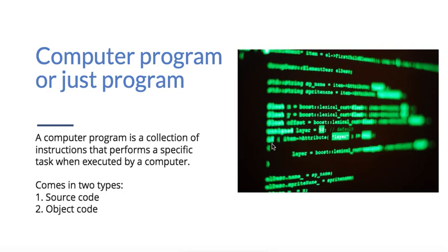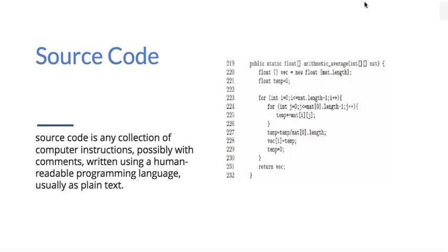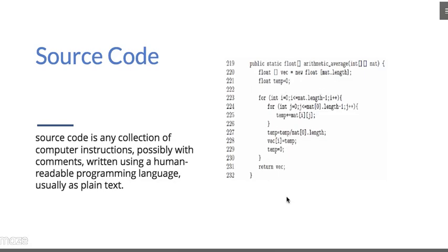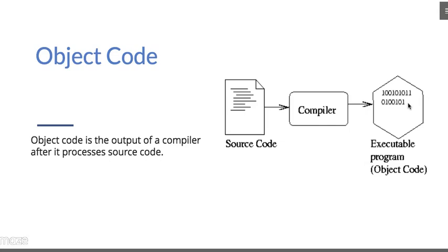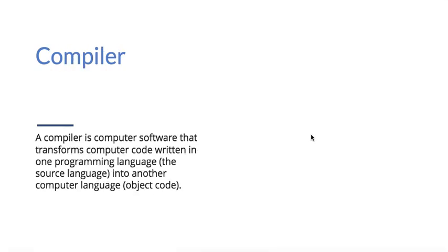Now this is the program for the computer. If you need the source code, remember to automatically fix the code or add a compiler. The source code is called a compiler working with an object code. We have to put the compiler in the source code, and we have to use the compiler as well.